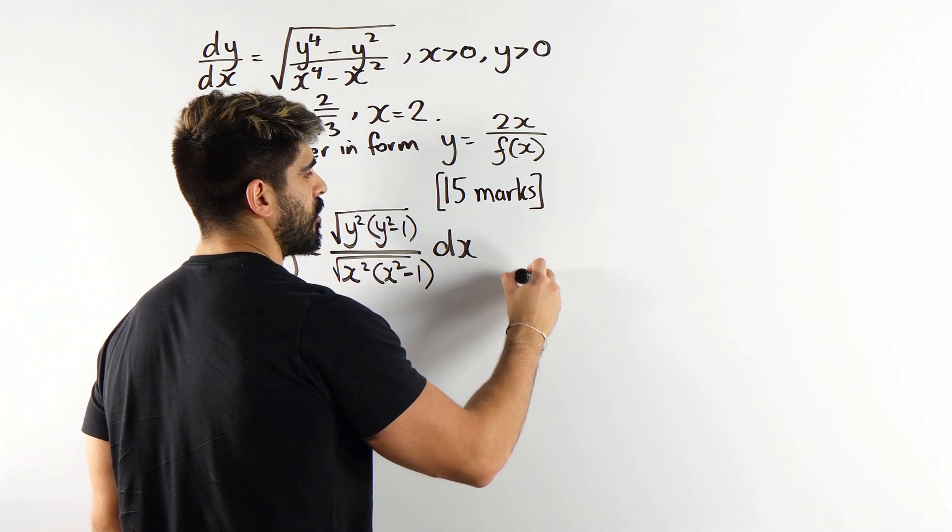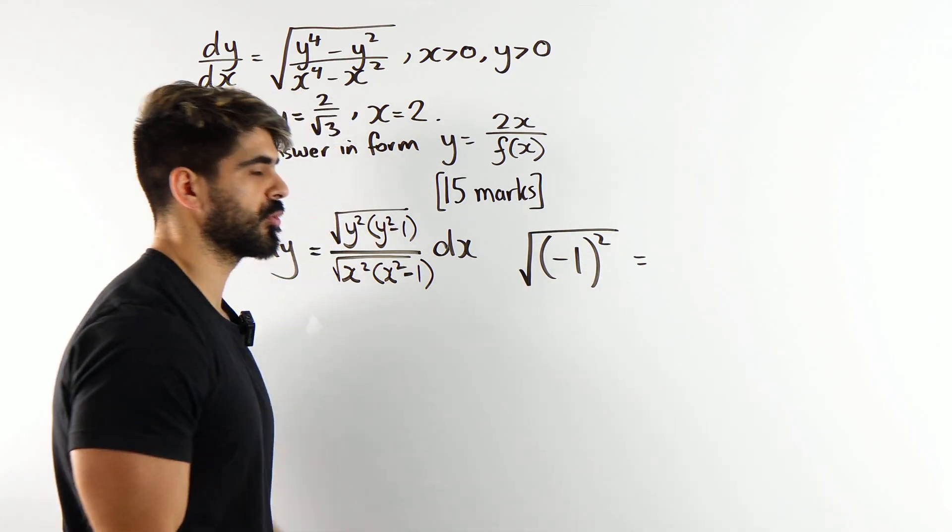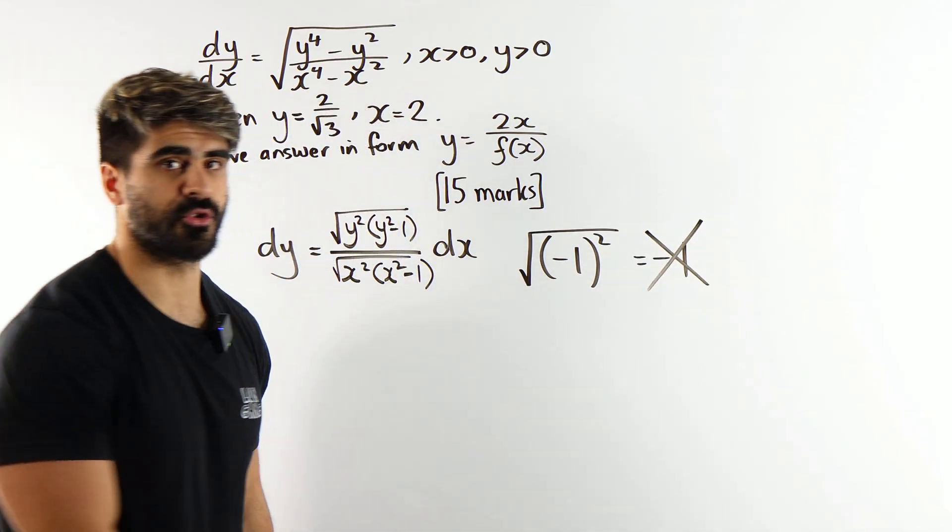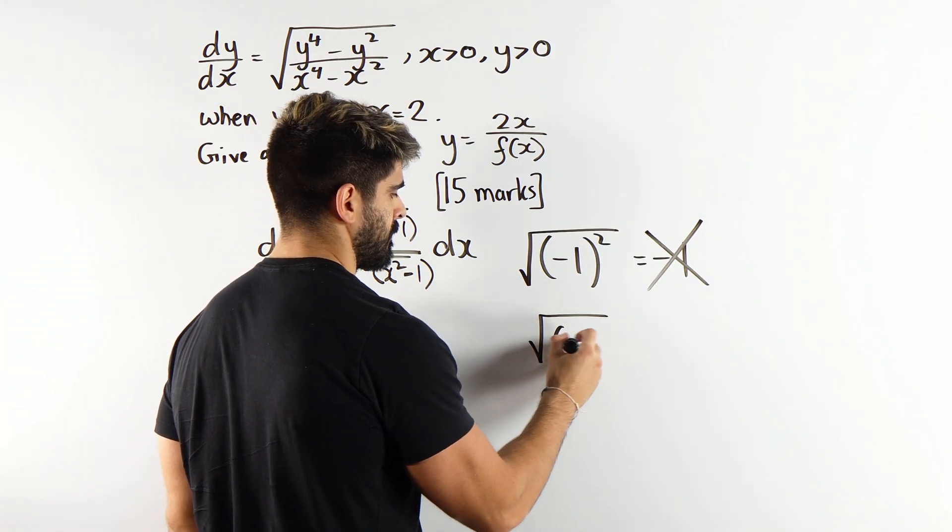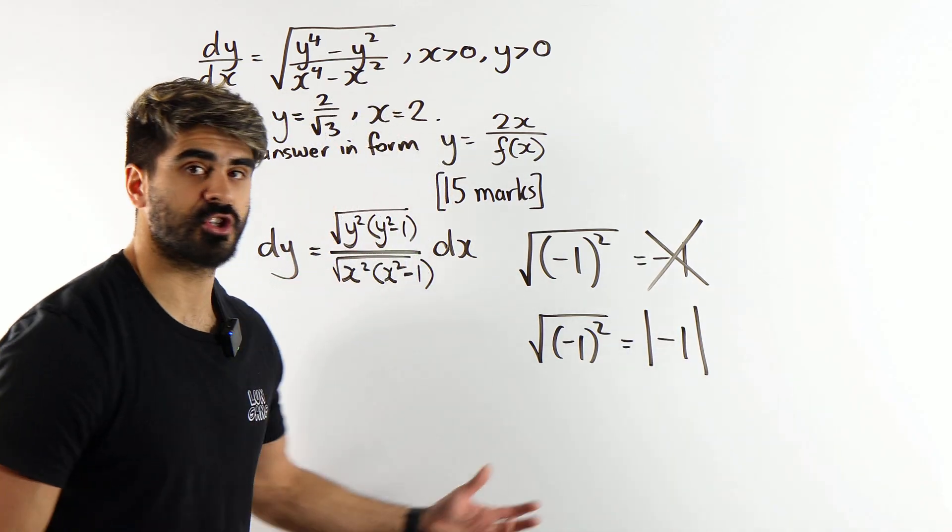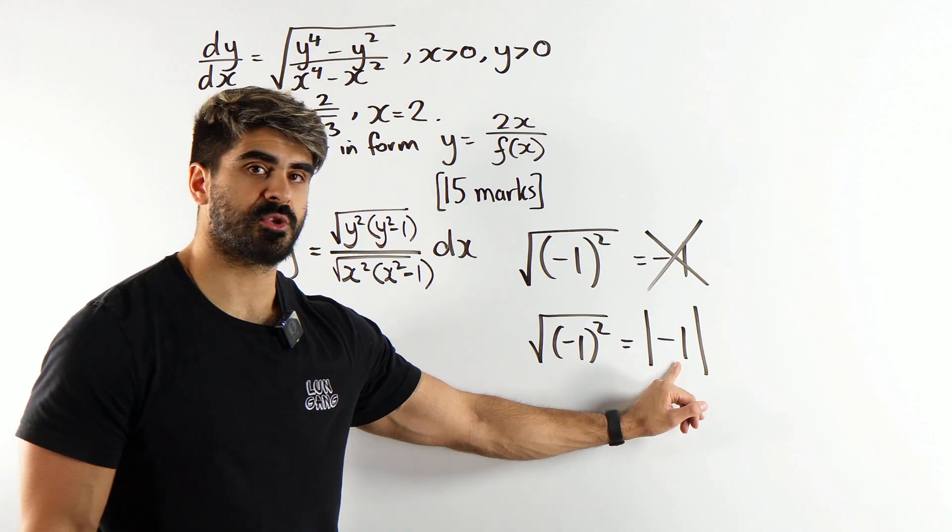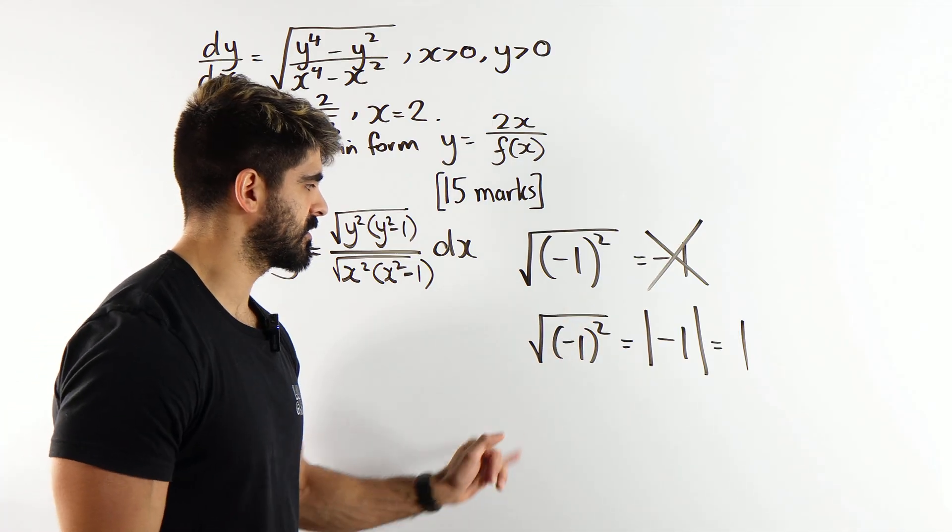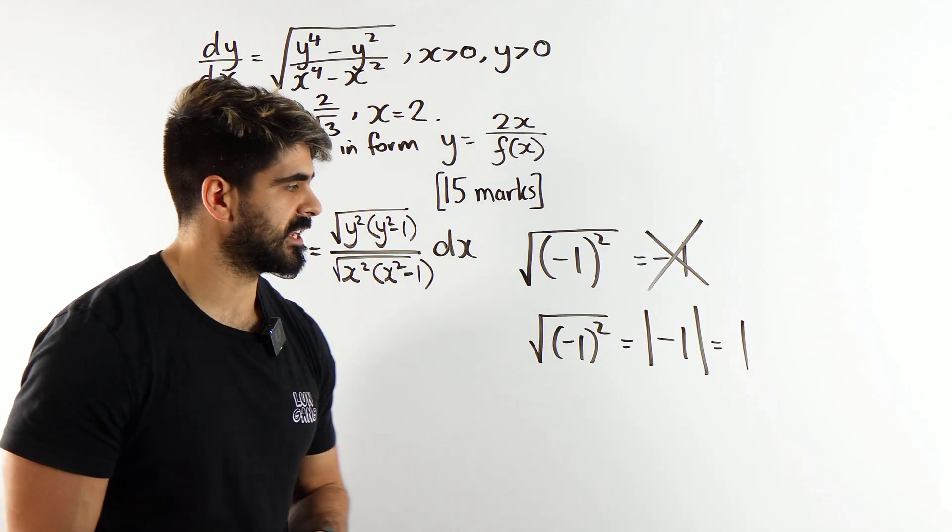If you just cancel that root with the y squared, technically, you are incorrect. Let me give you guys an example. If I asked you to root minus 1 squared, is your initial thought that that's minus 1? That is incorrect. Not true. When you root anything squared, it actually takes the absolute value of that function or number. So, the root of negative 1 squared is the absolute value of minus 1, which is 1.